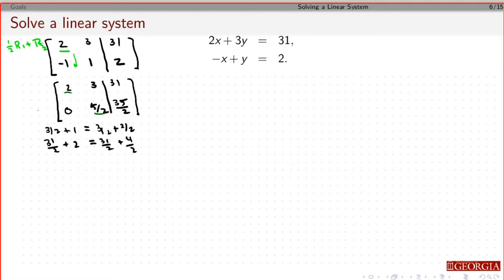Look at row 2. Row 2 says 5/2 y equals 35/2. So if I multiply by 2/5, I get y equals 7. I can plug that in and substitute, no problem.